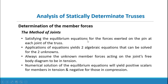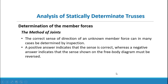The method of joints involves satisfying the equilibrium equations for forces exerted on the pin at each joint. Applying the equations yields two algebraic equations that can be solved for two unknowns. Always assume that unknown member forces acting on the joint free body diagram are in tension. A positive scalar result indicates tension and a negative result indicates compression. The correct sense of an unknown member force can in many cases be determined by inspection.